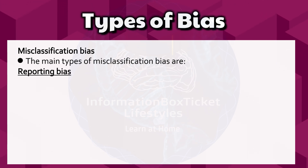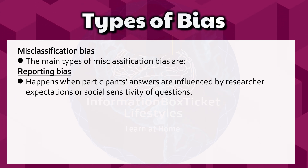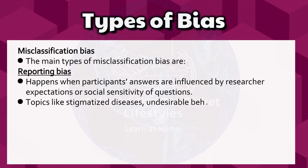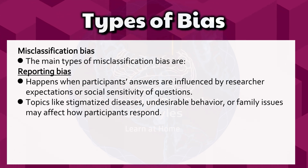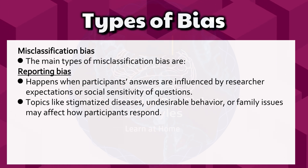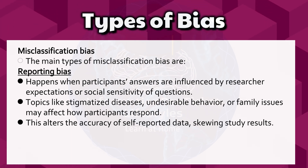Reporting bias happens when participants' answers are influenced by researcher expectations or the social sensitivity of questions. Topics like stigmatized diseases, undesirable behavior, or family issues may affect how participants respond. This alters the accuracy of self-reported data, skewing study results.